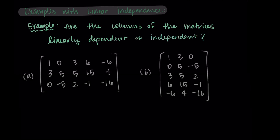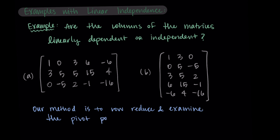We'll look at two matrices in particular. We want to know if the columns, as vectors, are linearly dependent or independent. As a reminder, a linearly dependent set of vectors means that one of the vectors is a linear combination of the others. An independent set will have no such linear combination. Our method for determining this is to row reduce and examine the pivot positions. If we have a column that corresponds to a free variable, that vector can be written as a linear combination of some of the other vectors.